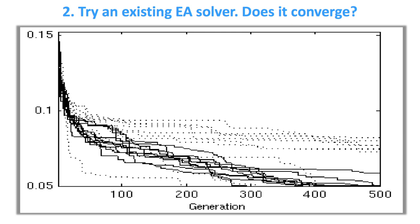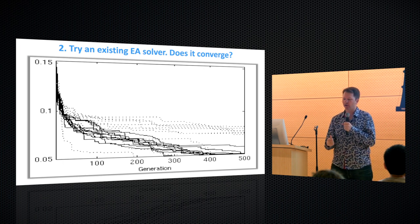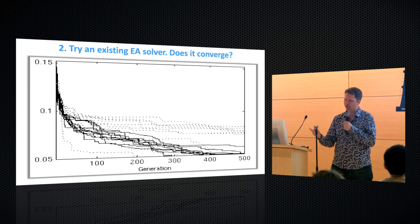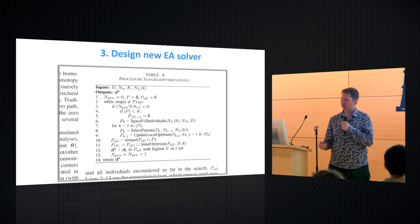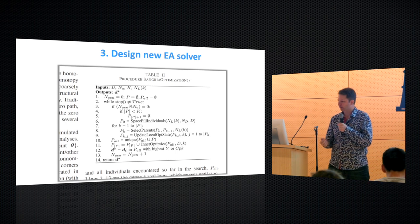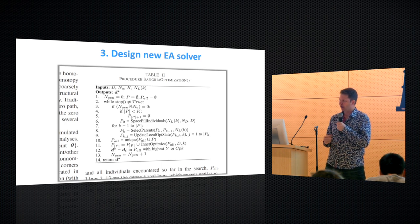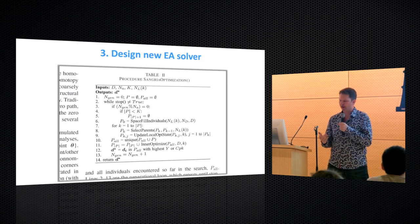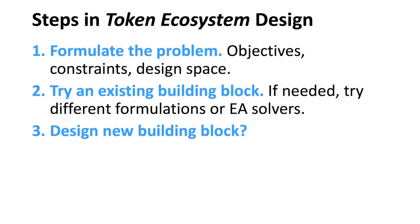If you're deploying a tokenized ecosystem and there's a 50% chance it will never converge — that's not so good. Ideally, you have something that converges reliably every single time. So if needed, you can design a new solver. This is a snapshot from another paper I wrote as part of my PhD, where I had to design a new algorithm. In the end, you design that new algorithm, and if it converges, great — if not, you keep iterating.